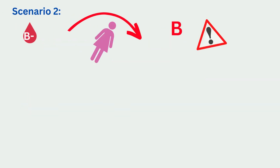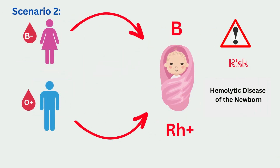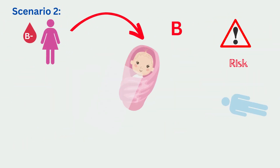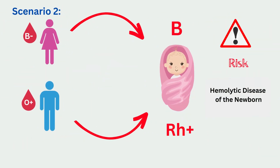Scenario two: the mother has a B negative blood group and the father has an O positive blood group. If a child gets the blood group type from the mother, which is type B, and the Rh factor which is Rh positive, then there is a high risk of hemolytic disease for the newborn.